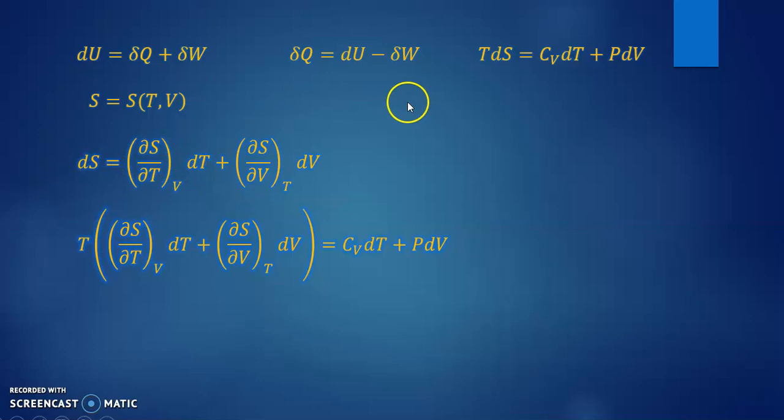So, if we replace this expression in here, we will get all these terms. We have T times dS, but dS is all this expression that we have in here between brackets. And multiplying T for its terms into the brackets, we get this other equation.